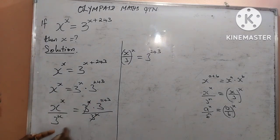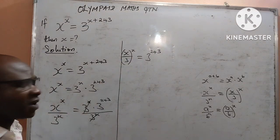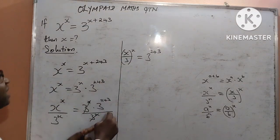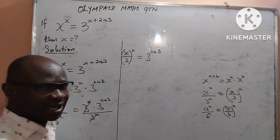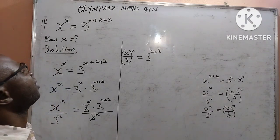The left hand side is now organized to one common power x, and the right hand side has no x any longer. We move on.